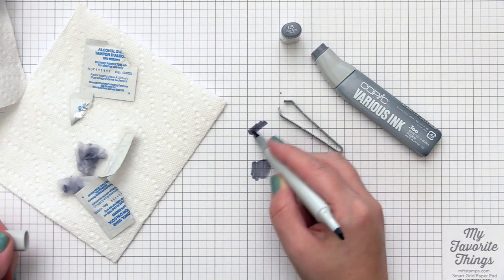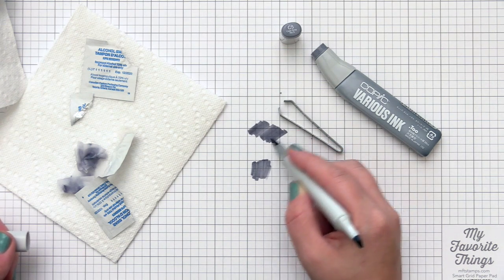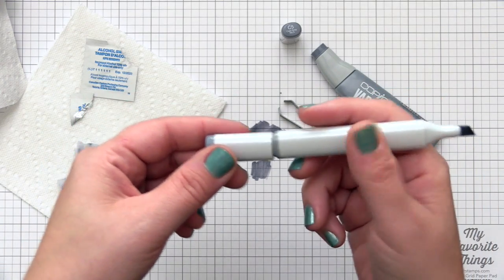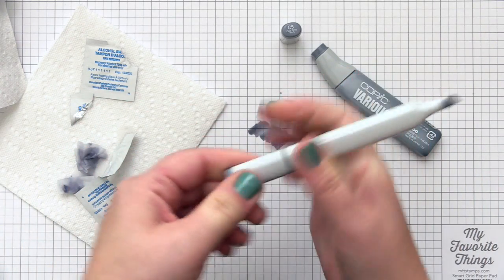Then I like to do a little test to make sure everything's working okay now that the marker has sat for a few minutes. I've let the ink settle inside, and everything's good to go. I can recap this, and I have a nice full marker ready for Copic coloring.